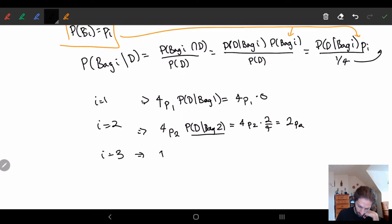i equals three. Well, this is four times P_3, P of D given bag three. This is 4 P_3. And here we had a one-fourth chance. So we just have P_3.